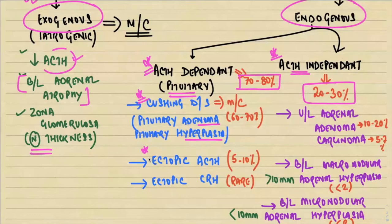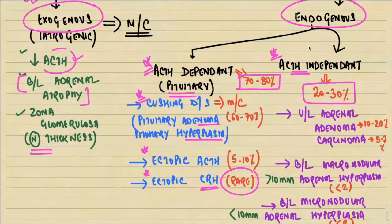Cushing syndrome is characterized by excessive hypercortisolism — excessive cortisol in circulation — whereas Cushing's disease is the term used when it occurs specifically because of a pituitary adenoma or pituitary hyperplasia. Among the endogenous ACTH-independent causes, approximately 10 to 20 percent occurs because of unilateral adrenal adenoma and 5 to 7 percent because of unilateral adrenal carcinoma, together constituting approximately 15 to 30 percent of cases.